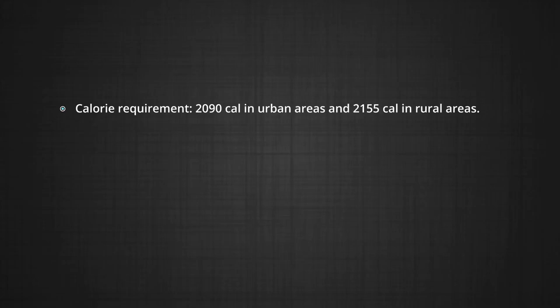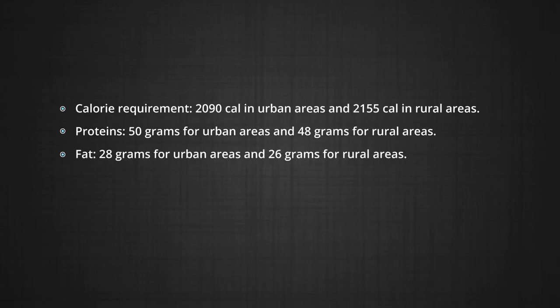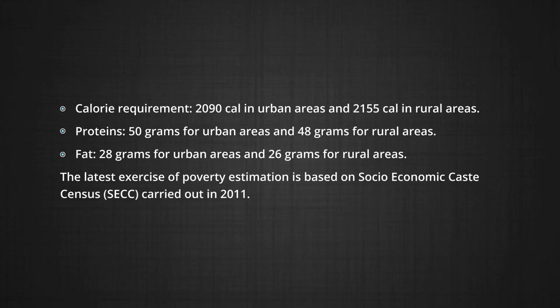The expert group was of the view that the expenditure of a household was more appropriate than that of individuals. The Rangarajan committee also took into consideration the average requirements of calories, proteins and fats based on ICMR norms: calorie requirement of 2090 kcal in urban areas and 2155 kcal in rural areas; proteins of 50 grams for urban and 48 grams for rural areas; fats of 28 grams for urban and 26 grams for rural areas. The latest exercise of poverty estimation is based on the Socio-Economic Caste Census, that is SECC, carried out in 2011.